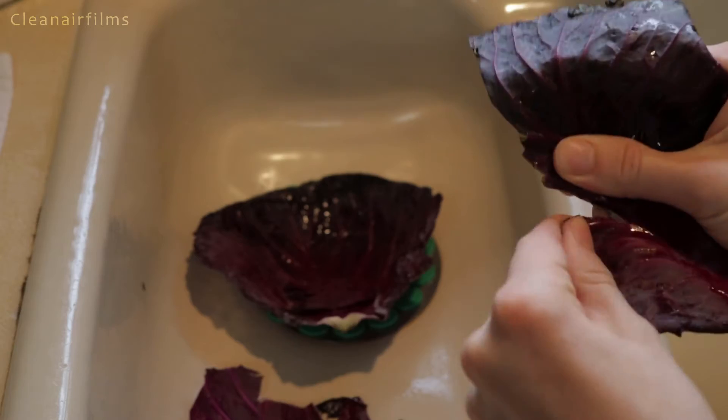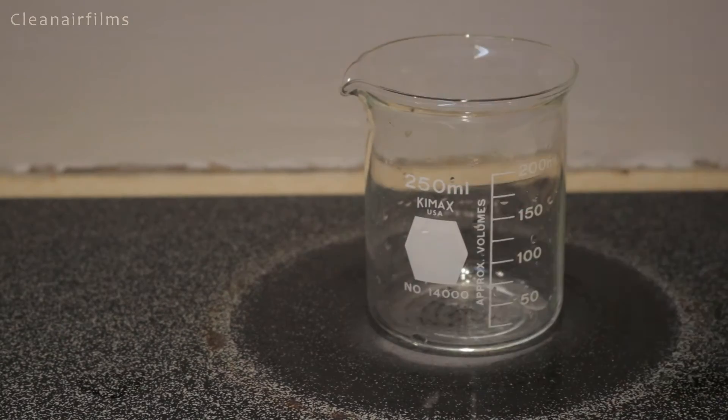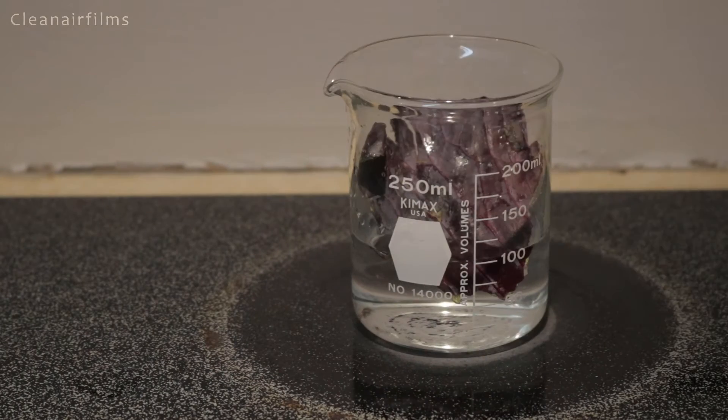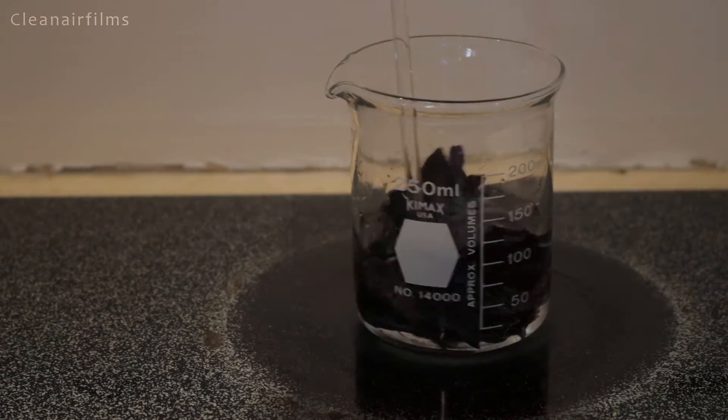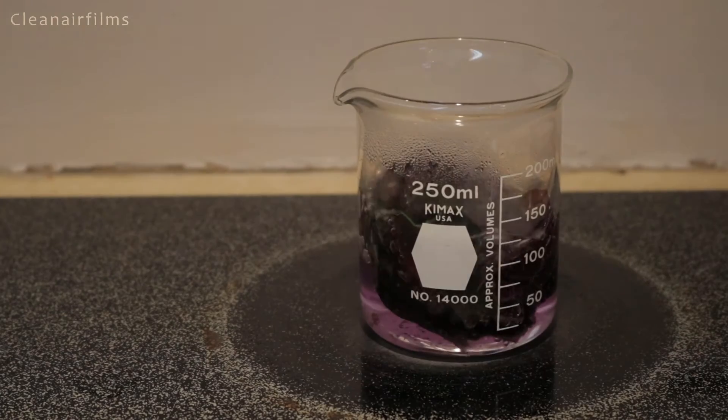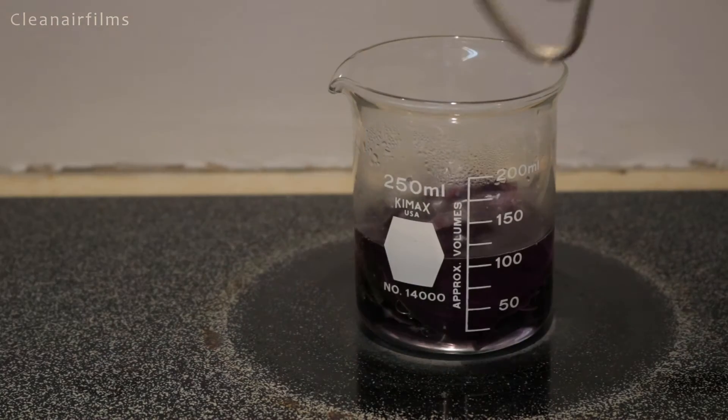Clean a few leaves and tear them into pieces. Then place them into a heat-safe beaker. Now add 100 milliliters of distilled water. Bring it to a boil for three minutes. The liquid should be purple. If it is not, the pH is off.